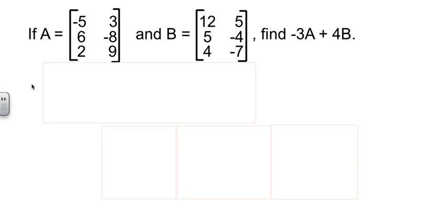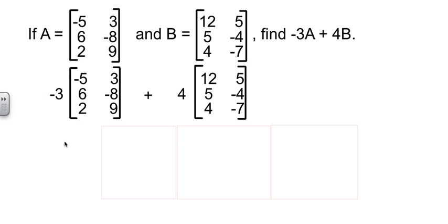Let's look at the most complicated kind of problem you're going to have in this assignment. We have two matrices. They each have three rows and two columns, so we can do some arithmetic on them. And we're being asked to find negative 3A plus 4B.